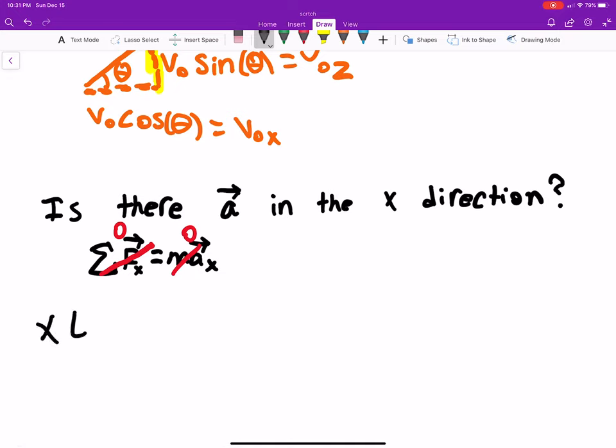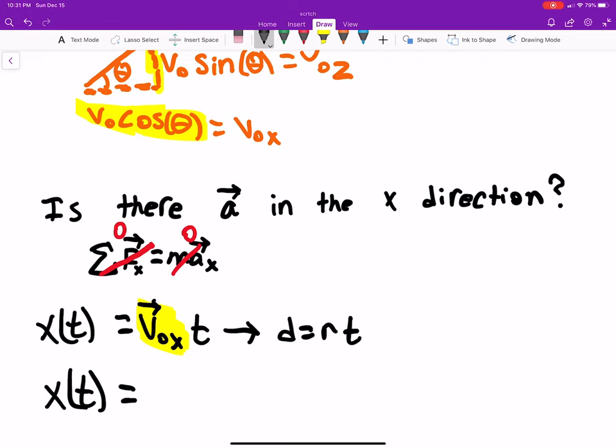So because of that, x as a function of time is going to be equal to v naught in the x direction times time. That's just distance equals rate times time. Well, we know what this is - v naught in the x direction is just v naught cosine theta. So simplifying this a little bit more, substituting in, x as a function of time is v naught cosine theta times time.